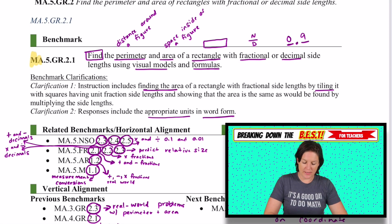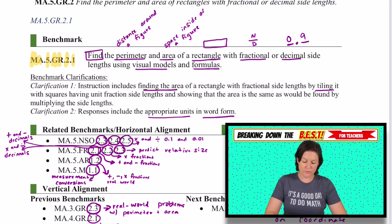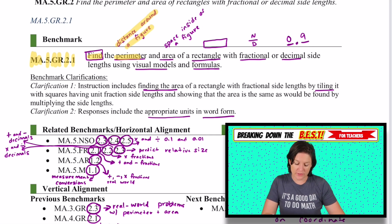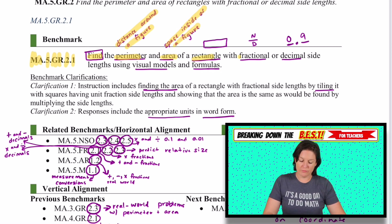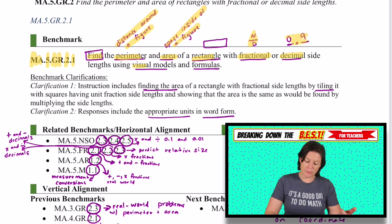Today's standard is MA.5.GR.2.1, and this standard says to find the perimeter, which is the distance around a figure, and the area, which is the space inside of a figure, of a rectangle with fractional or decimal side lengths using visual models and formulas.